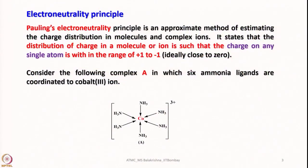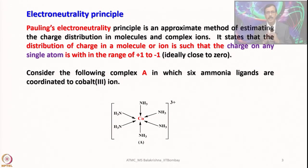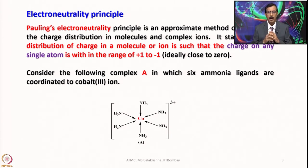Pauling's electron neutrality principle is an approximate method of estimating the charge distribution in molecules and complex ions. What it states is that the distribution of charge in a molecule or ion is such that the charge on any single atom is within the range of +1 to −1, ideally close to 0. That means in a metal complex, all species involved should have a charge between +1 and −1, ideally close to 0.